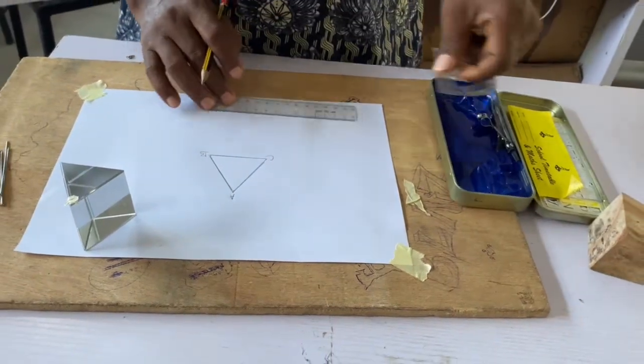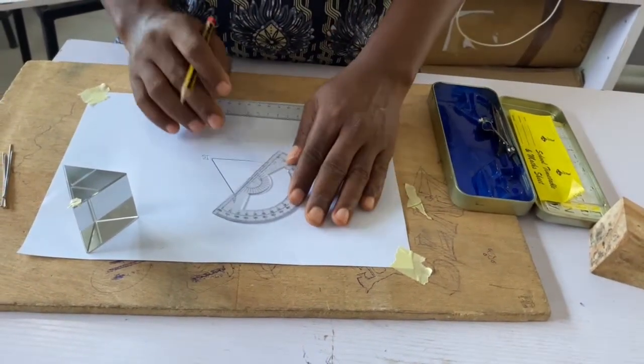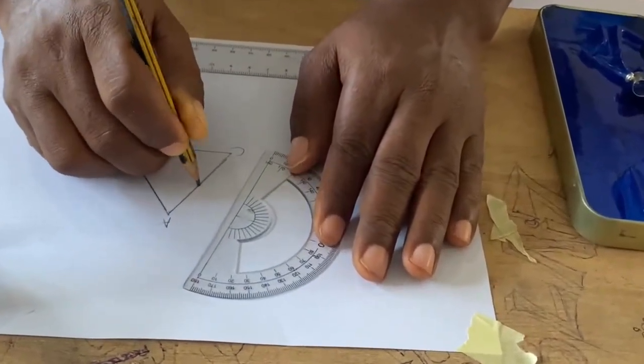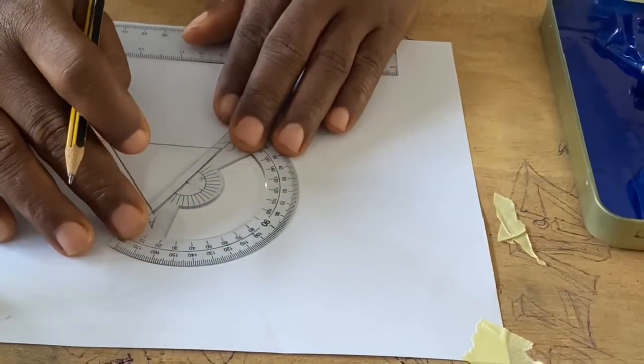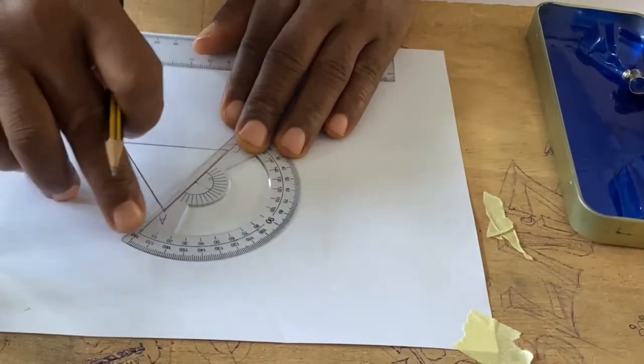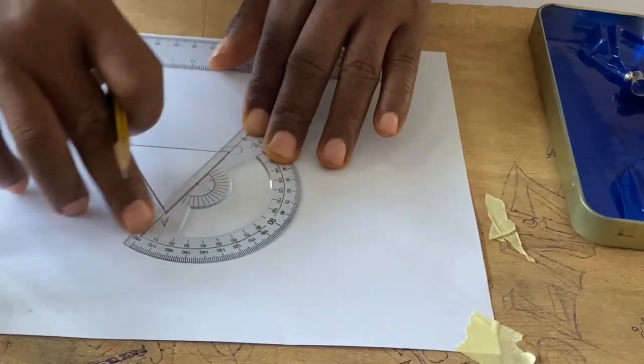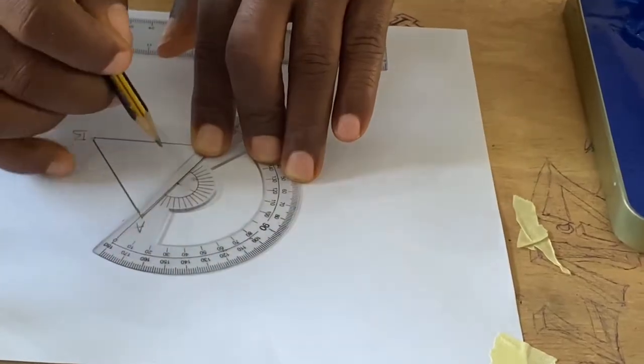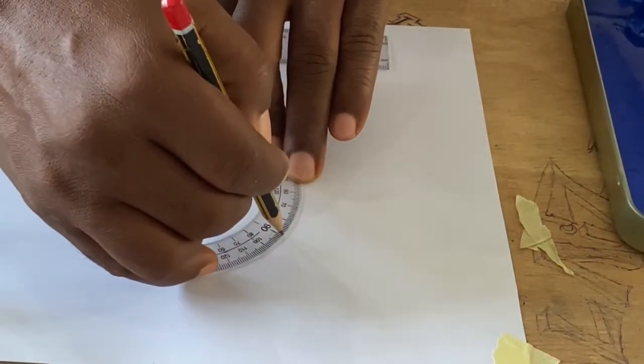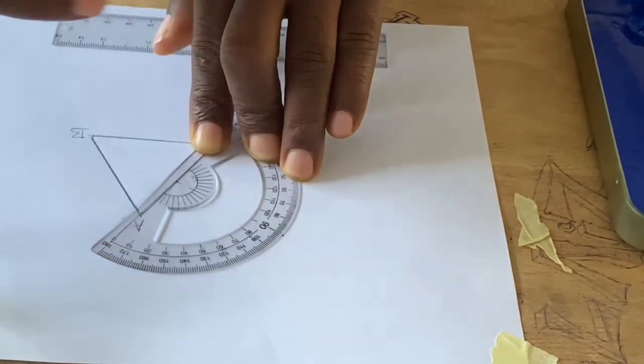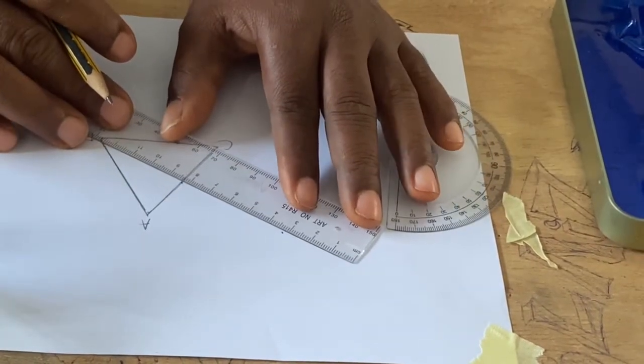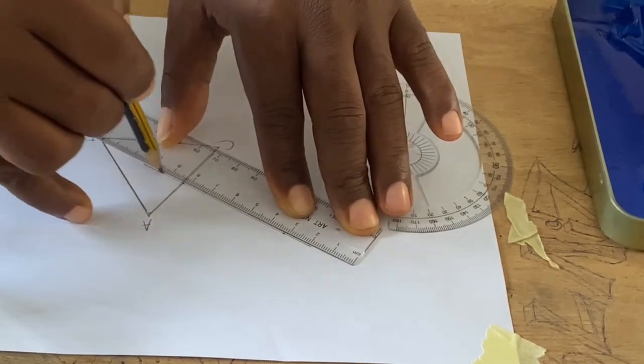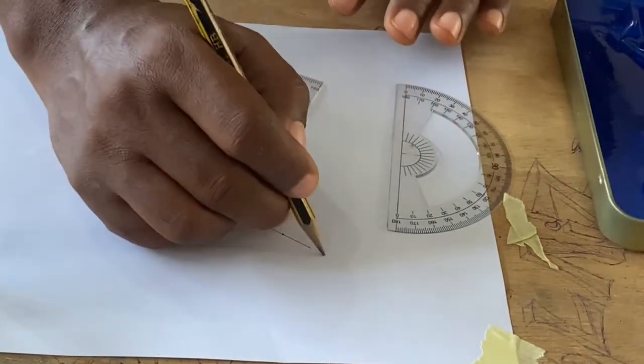I need to draw a normal. A normal is 90 degrees at any point on line AC. So I measure my 0 and 180 line on line AC. I place my meter rule and point the 90 degrees. After that, I will join the normal to that point. So I have my normal.